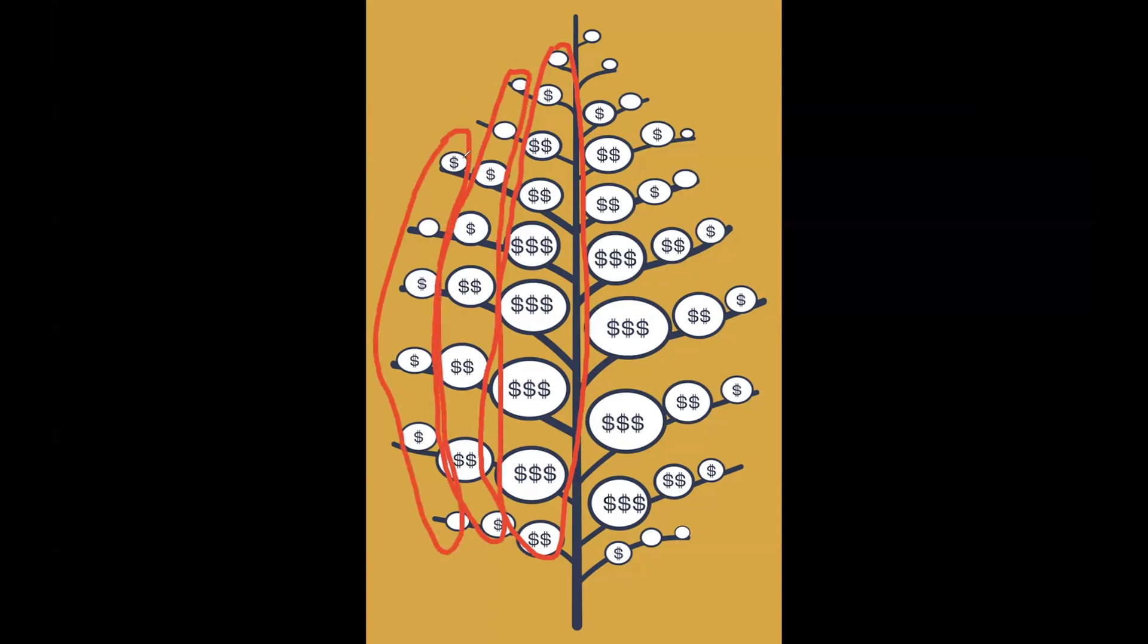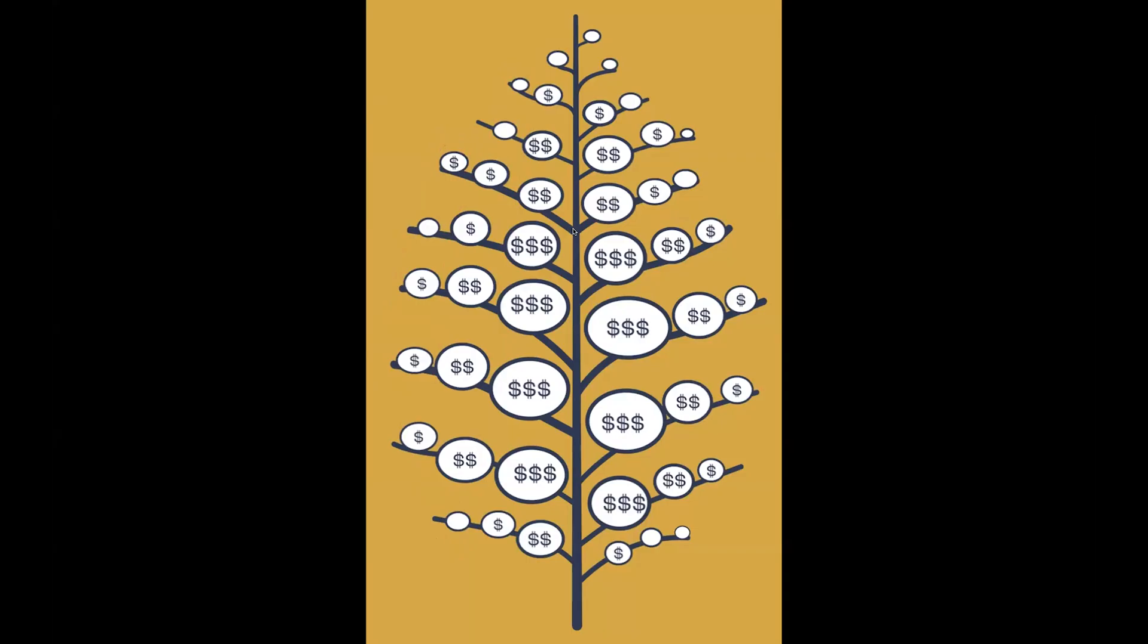Here where it gets real interesting, we start talking about fruiting branches five through 11. And these are really your money-making branches. Probably over three quarters of your yield potential comes from this portion of your plant. Square retention takes a leap here for first position is 90%. So we hold on to 90% of the positions in first position.